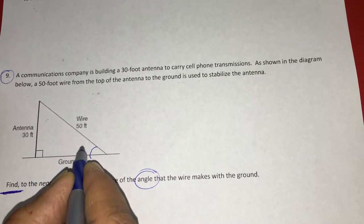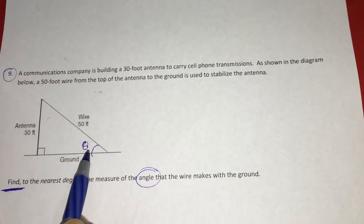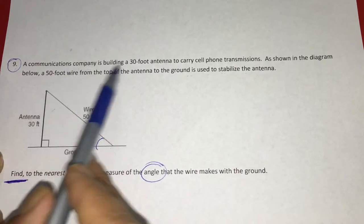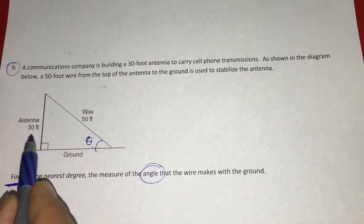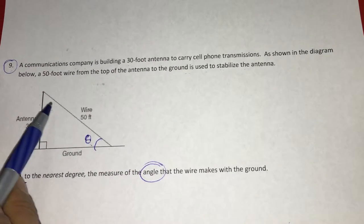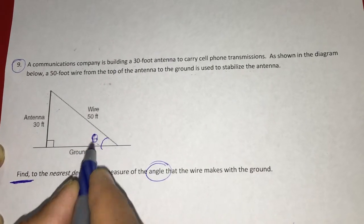We call this angle as theta. We don't know how much theta is, so we're going to find theta now. Let me show you: this is a 30-foot antenna, that means the height of the antenna is 30 feet. Next, the wire has a length of 50 feet. And this is the angle.